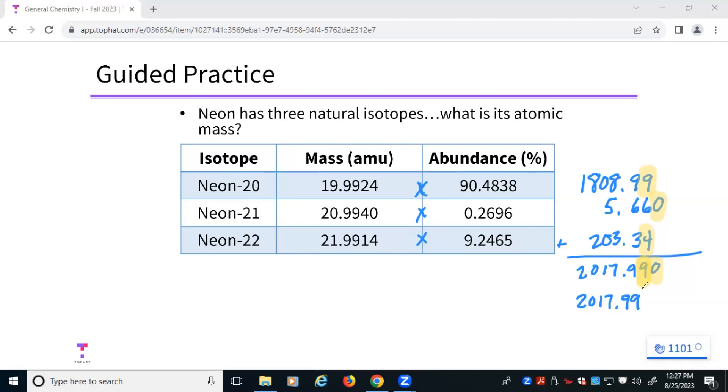Now, the other question you might be asking yourself is, so hold on, wait a second. 2017, that doesn't match any of the masses over there. It's not even close. Well, there's one more thing that we have to do. We use percentages here. Percentages are multiplied by 100. So the value that I get off of this is 100 times bigger than what it should be. To turn this into an actual mass, I need to get rid of that 100x factor. So I'm going to divide by 100. And when I do so, I'm going to give you my final value, 20.1799 AMU.